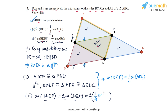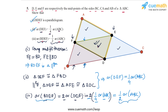So we get twice of one-fourth of the area of ABC, which is half the area of ABC. So the area of BDEF is one-half of the area of ABC. That proves part three, and with this all the parts of question five are done.